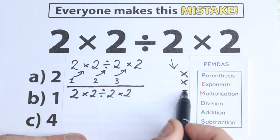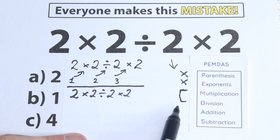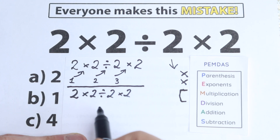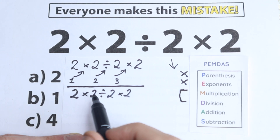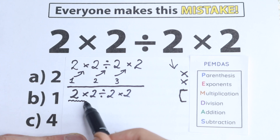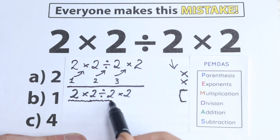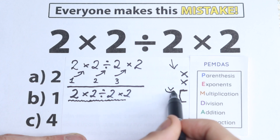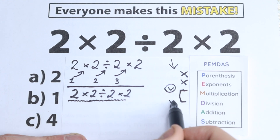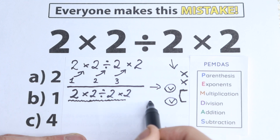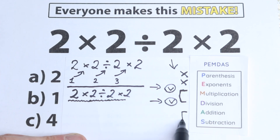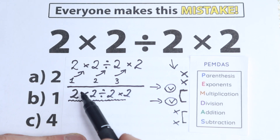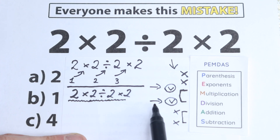Next is the multiplication and division group. A lot of students make this mistake — they say we need to multiply first. But right here we have a multiplication and division group, and we need to find where we have each sign. We have a multiplication sign, a division sign, and another multiplication sign — so all signs here are multiplication and division. We also don't have any addition or subtraction signs, so we can skip that part entirely.